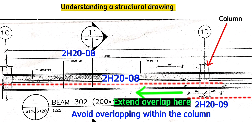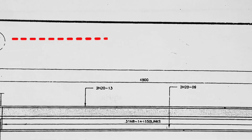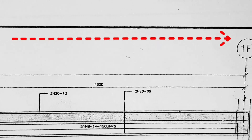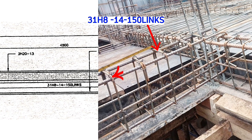The drawing also details that from grid line 1E to grid line 1F, we shall have 31 H8 links Code 14 with 150 millimeters spacing center to center. So from here up to here is 150 millimeters, and the same applies throughout.